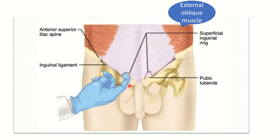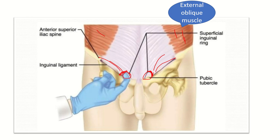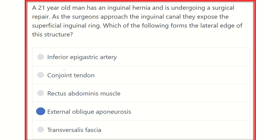We need to find out what forms the lateral edge of the superficial inguinal ring. We can see a whitish structure forming the lateral edge. Tracing it back, we can see it is the fascia of the external oblique muscle. So the lateral edge of the superficial inguinal ring is formed by the external oblique muscle — our final answer is the external oblique aponeurosis.